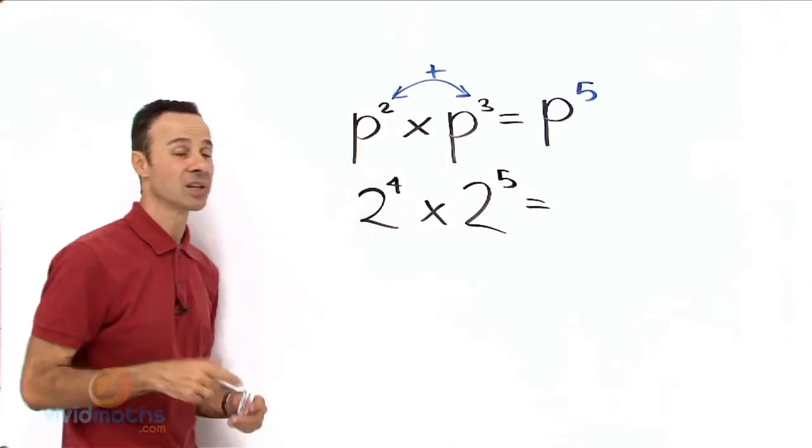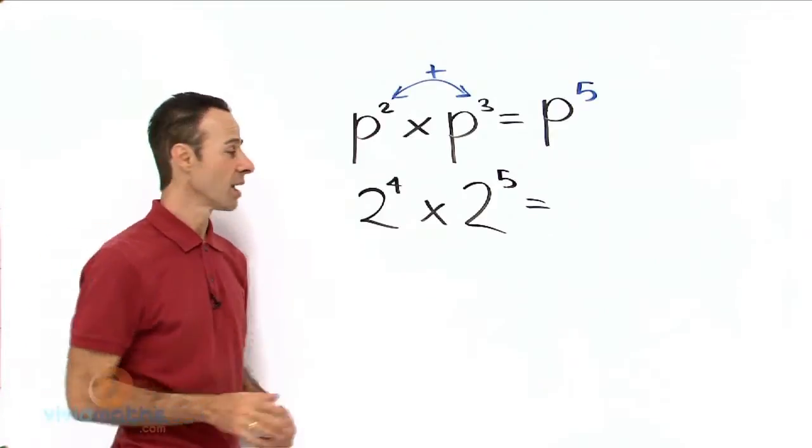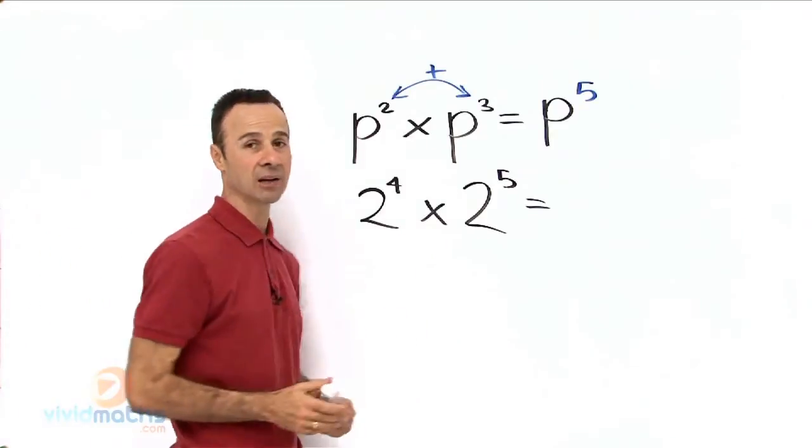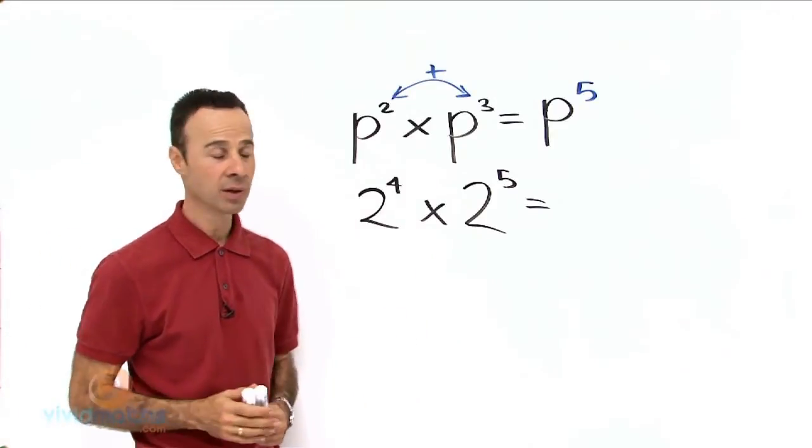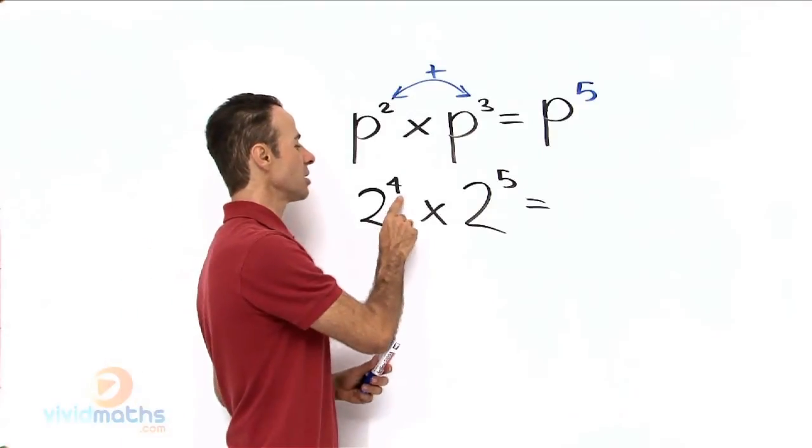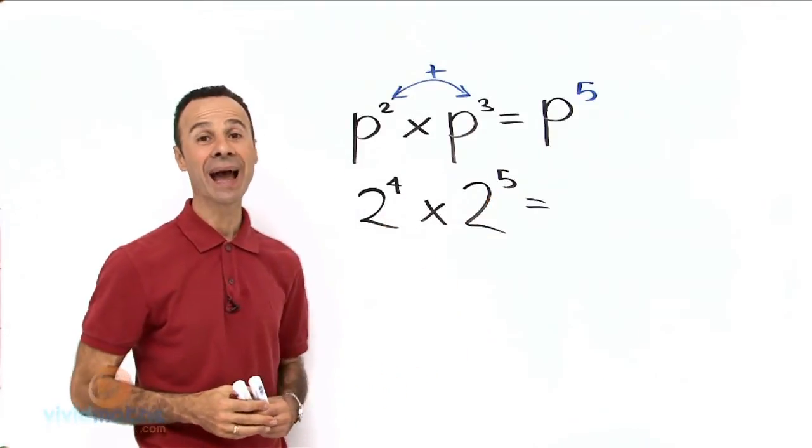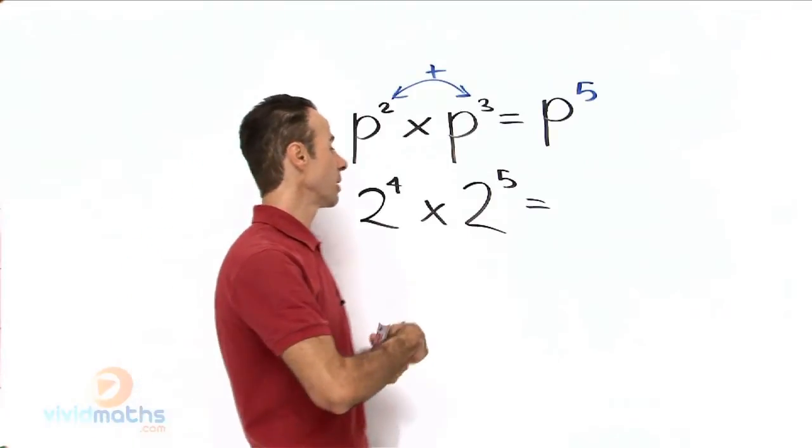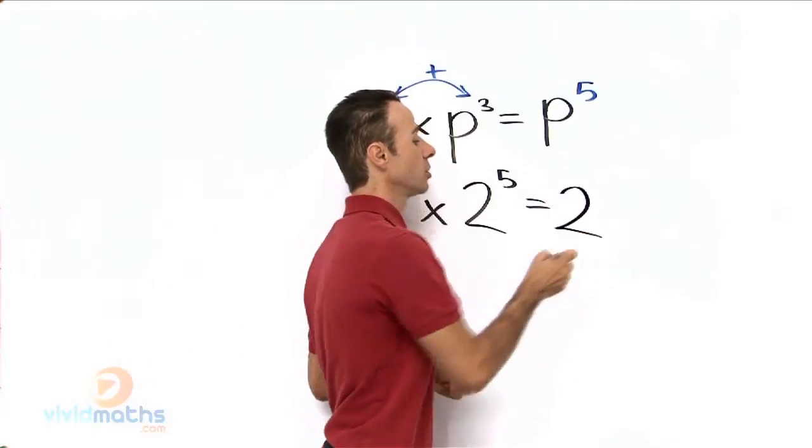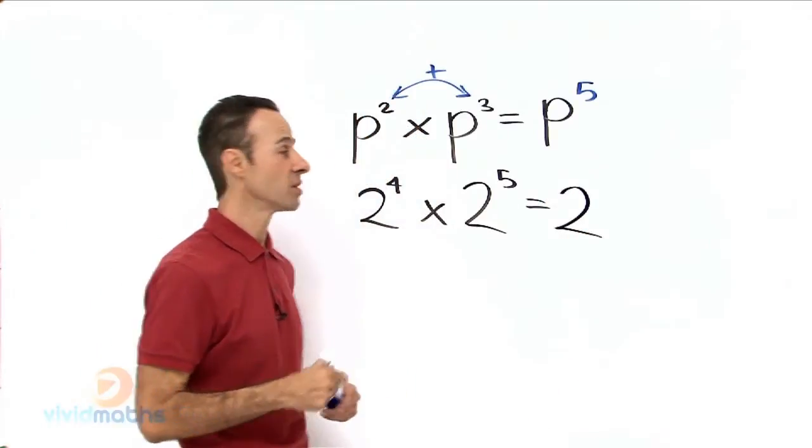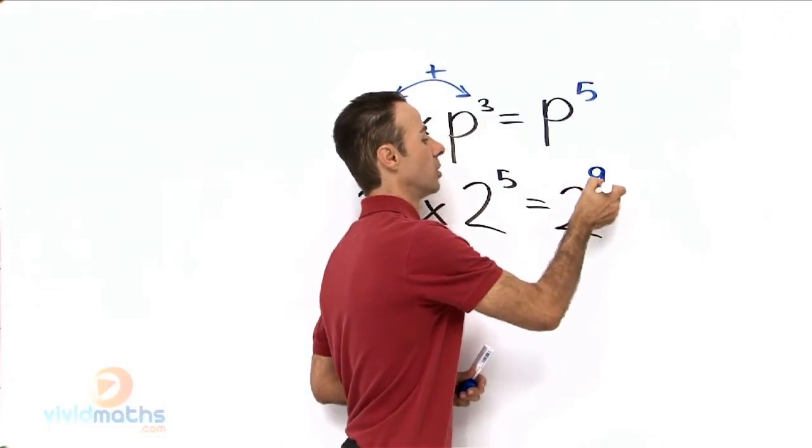Now exactly the same thing applies, as these factors are exactly the same and identical. So here, the indices 4 and 5, all we do is we add them. So the answer simply will be 2, and 4 plus 5 is 9.